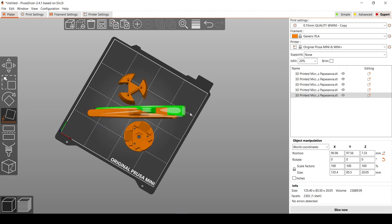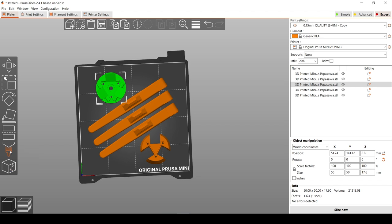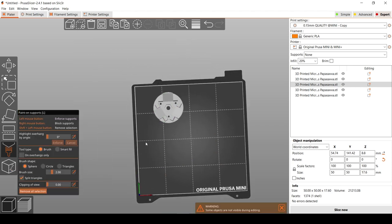I copied the leg part another 2 times, arranging all the parts, and then beginning to apply paint on supports.